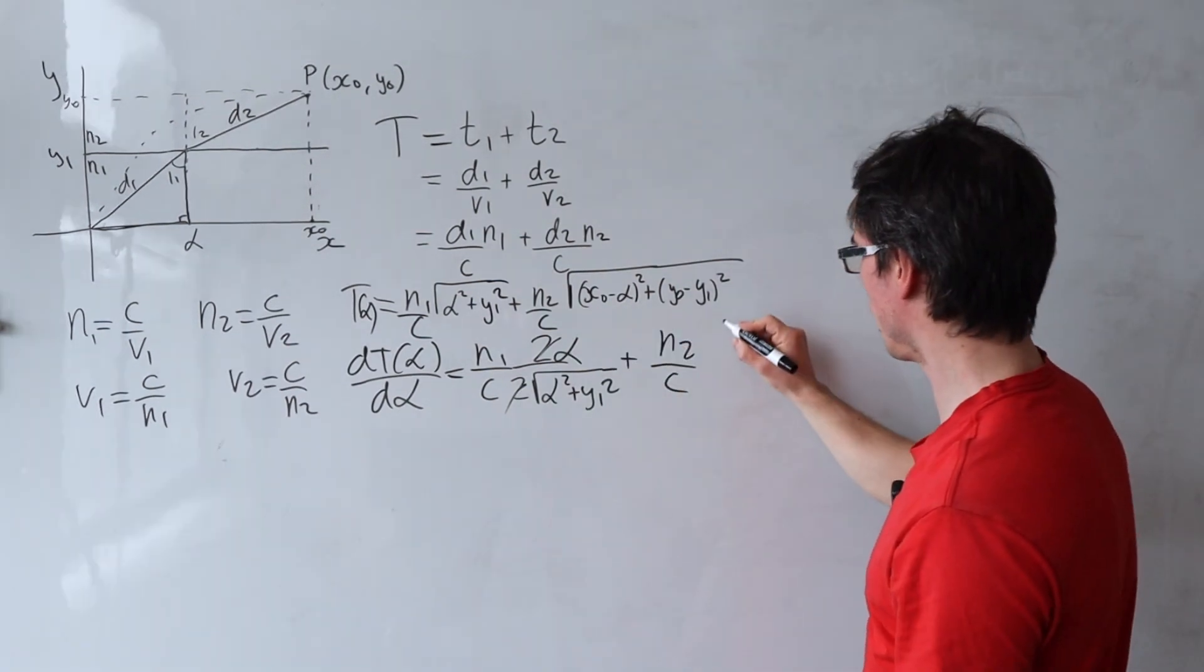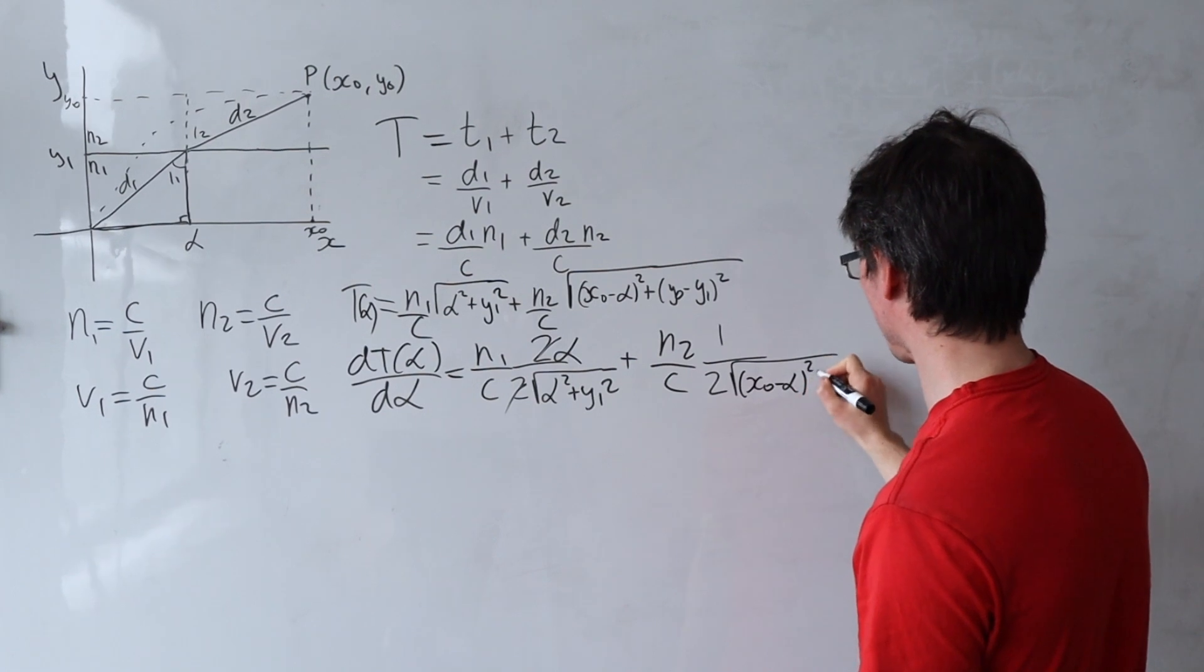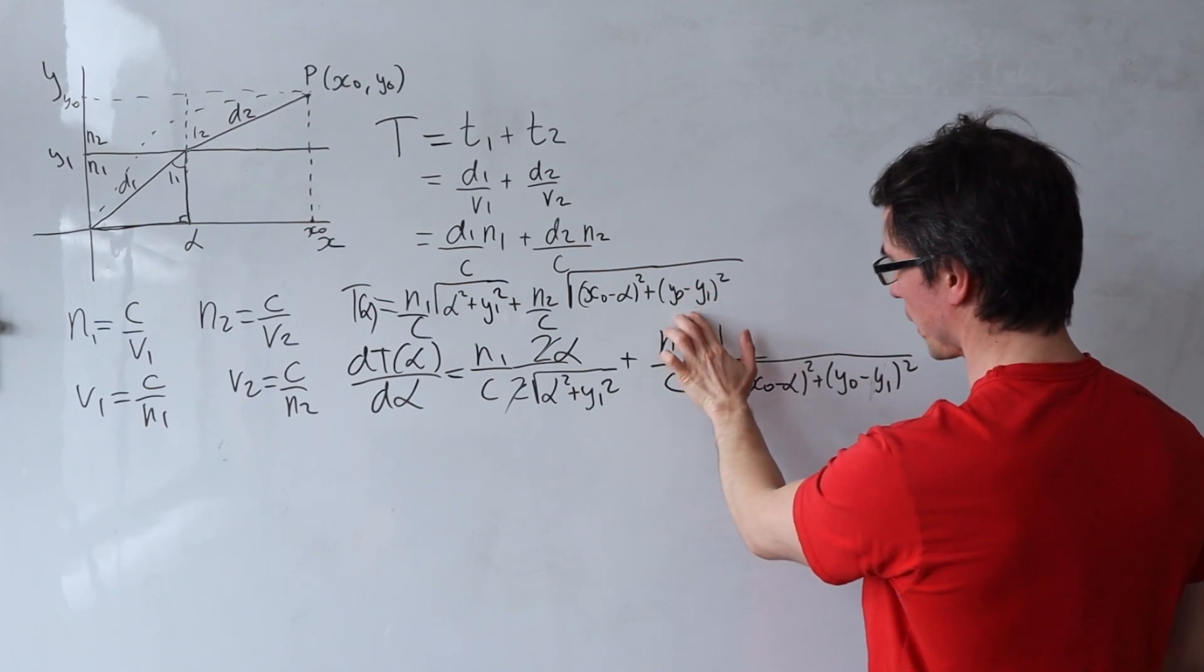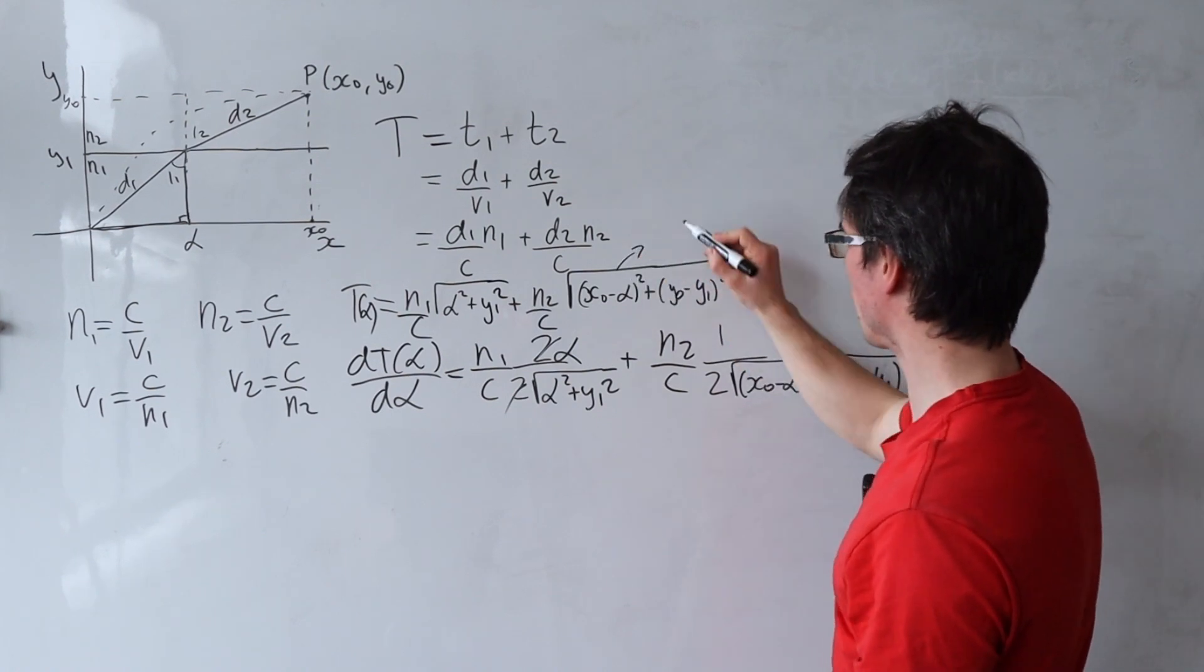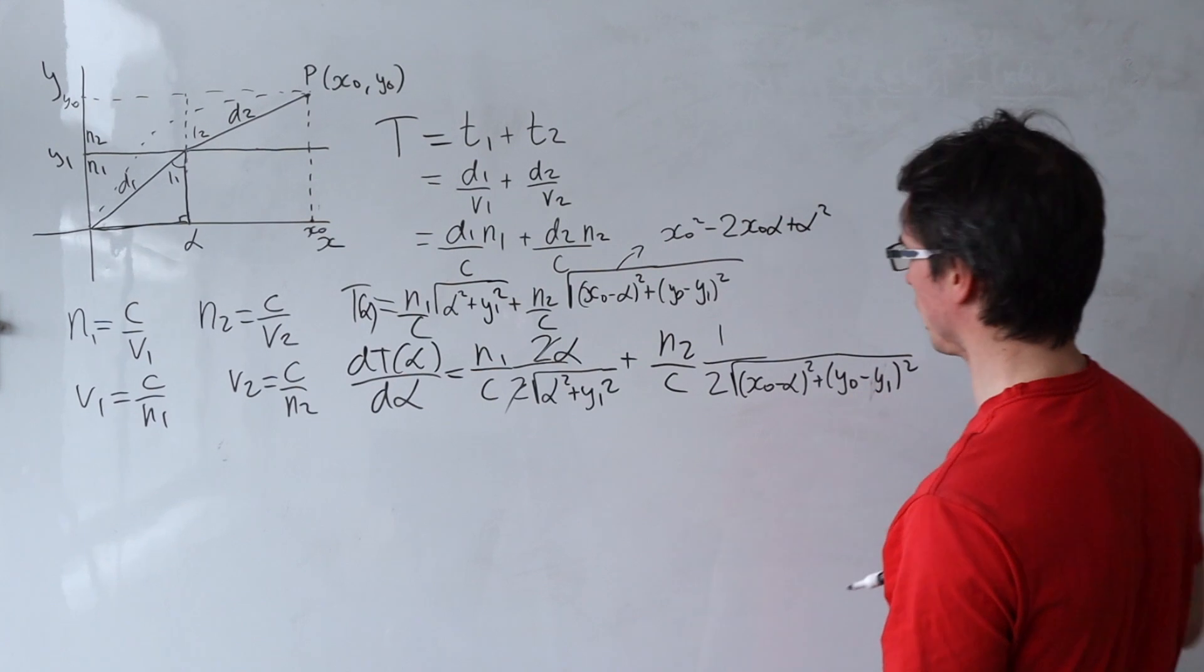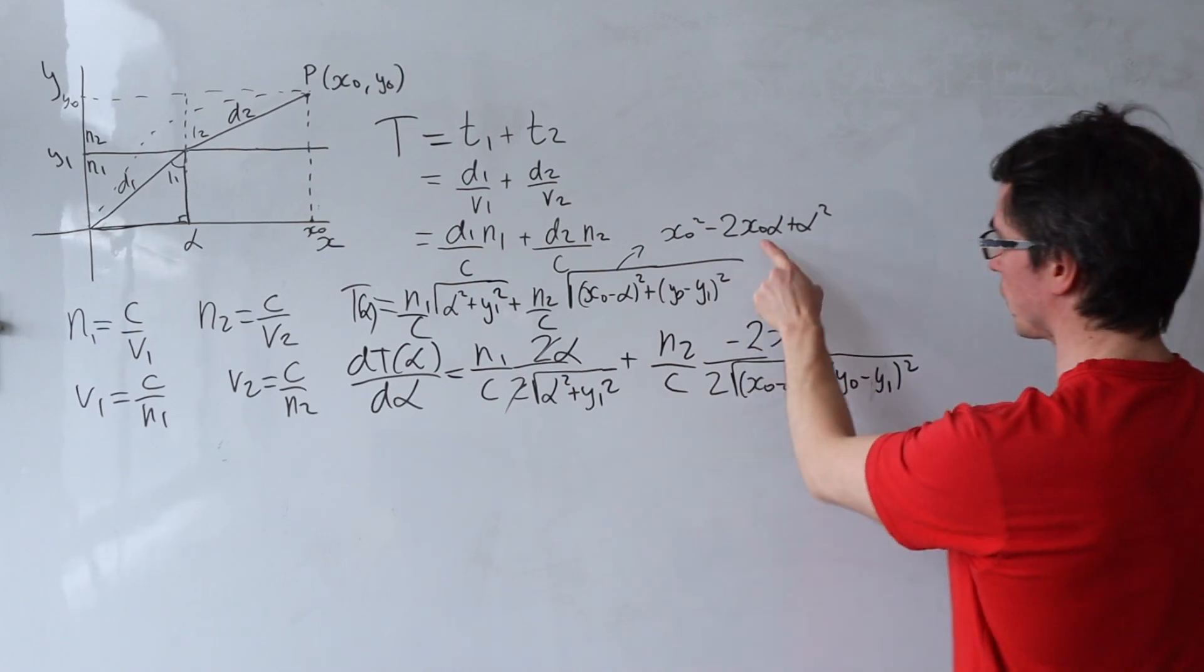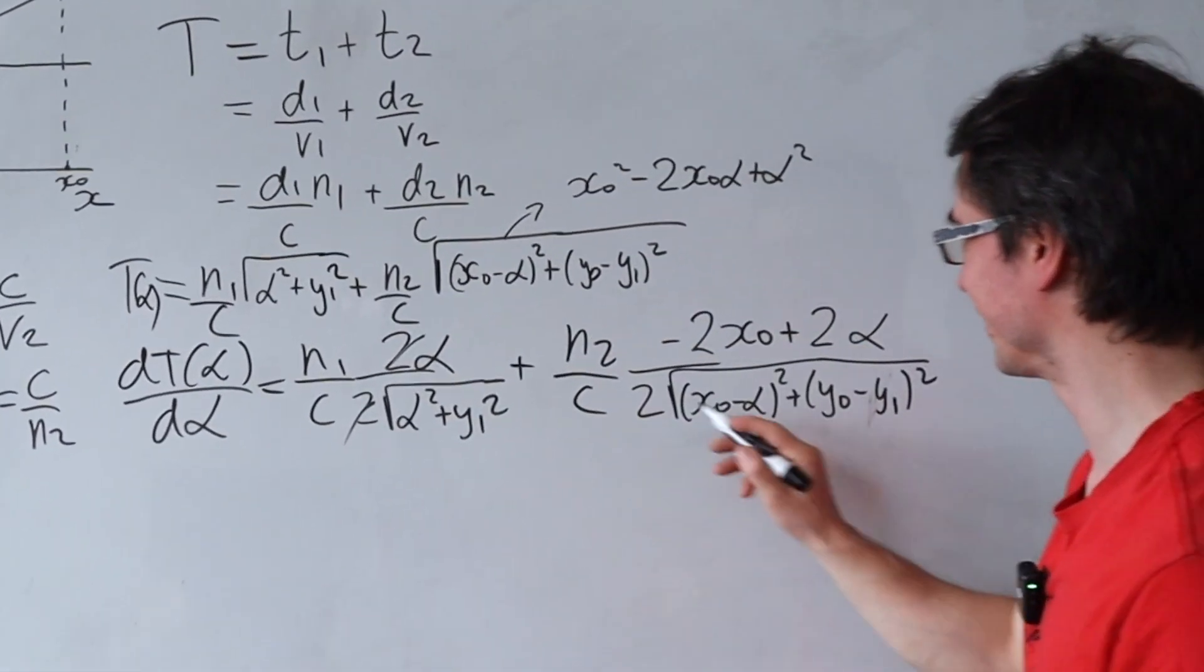This is going to cancel out nicely plus n2c. And then once again the derivative of a square root is 1 over 2. Then we have the square root of x0 minus alpha squared plus y1 squared. Okay the derivative of the inside function. This here has no factors of alpha so we can ignore that. But this one here does. So just to make our life a little bit easier I'm going to expand it out. So it's going to be x0 squared minus 2x0 alpha plus alpha squared. So the derivative of this function with respect to alpha is just going to give me minus 2x0. That's the derivative of this plus the derivative of that which is 2 alpha. Notice those 2's canceling out. Perfect.